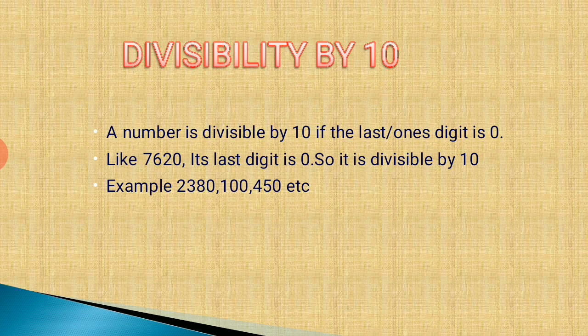Next is the divisibility rule of 10. A number is divisible by 10 if its last digit, that means its ones place, is 0. For example, 7620 — the last digit is 0, so it is divisible by 10. Other examples: 2380, 100, 450, etc.